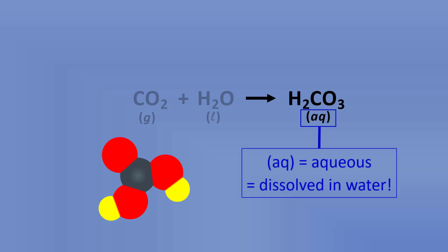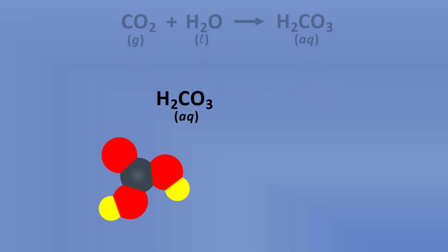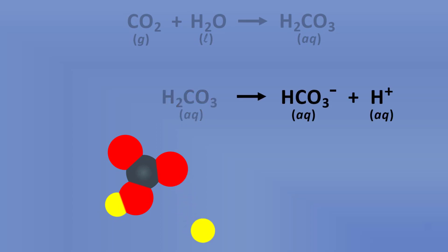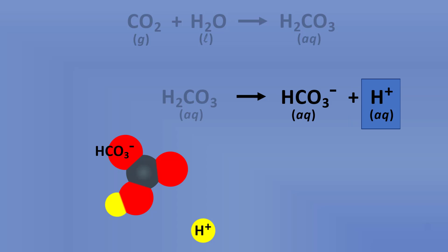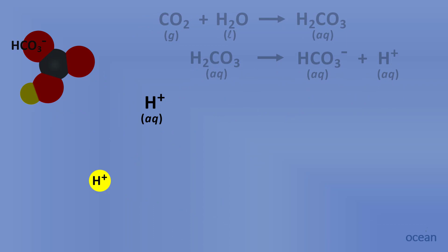Aqueous refers to a compound that is dissolved in water. But carbonic acid, H₂CO₃, when aqueous, also undergoes a reaction — it loses a hydrogen ion. The products are hydrogen carbonate, HCO₃⁻ aqueous, and an aqueous hydrogen ion — a hydrogen ion dissolved in water. The hydrogen ions are what we're most interested in.